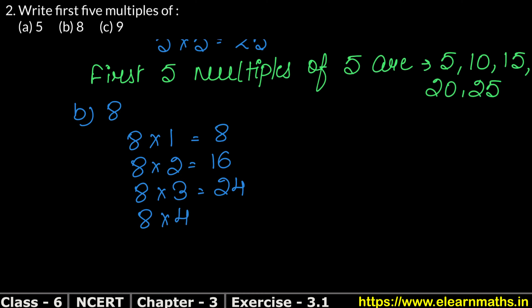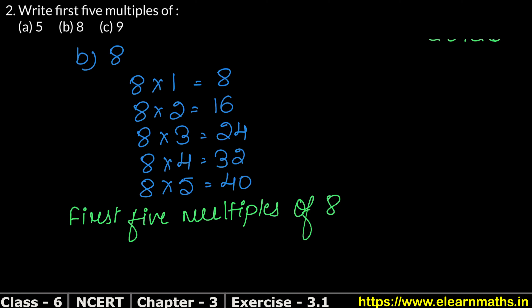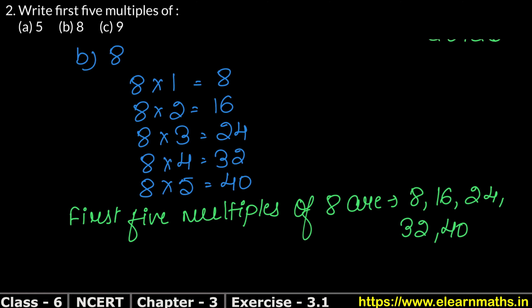So the first 5 multiples of 8 are: 8, 16, 24, 32, and 40. That is the answer.